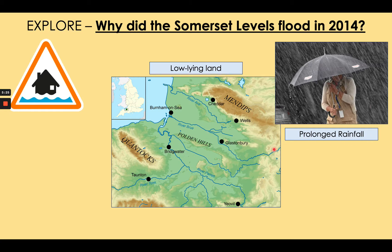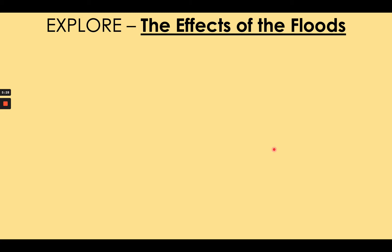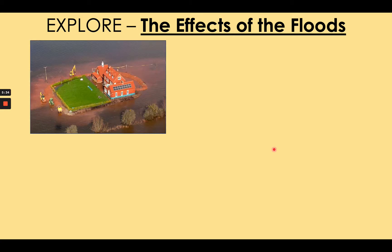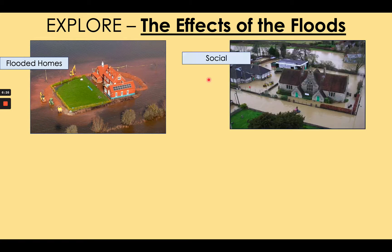Prolonged rainfall means it goes on for a long time. More than 600 homes in the Somerset Levels area were flooded — up to more than two meters in some cases — with gardens completely destroyed and homes completely inundated, meaning filled up with water. One man was lucky enough to have built a mud wall around his home in advance, protecting it. This had significant economic effects because it forced people to spend a lot of money renovating or repairing their homes.